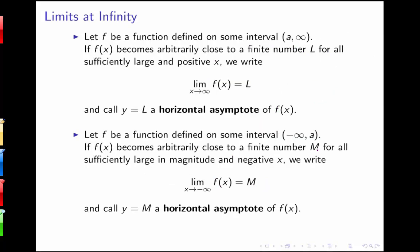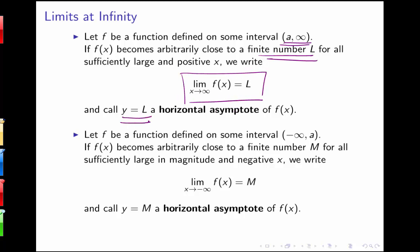Here are some definitions. If we have a function defined on some interval from a to infinity, and f(x) becomes arbitrarily close to some finite number L for all sufficiently large x, we say that the limit as x goes to infinity of f(x) equals L, and we call y = L a horizontal asymptote of the function.